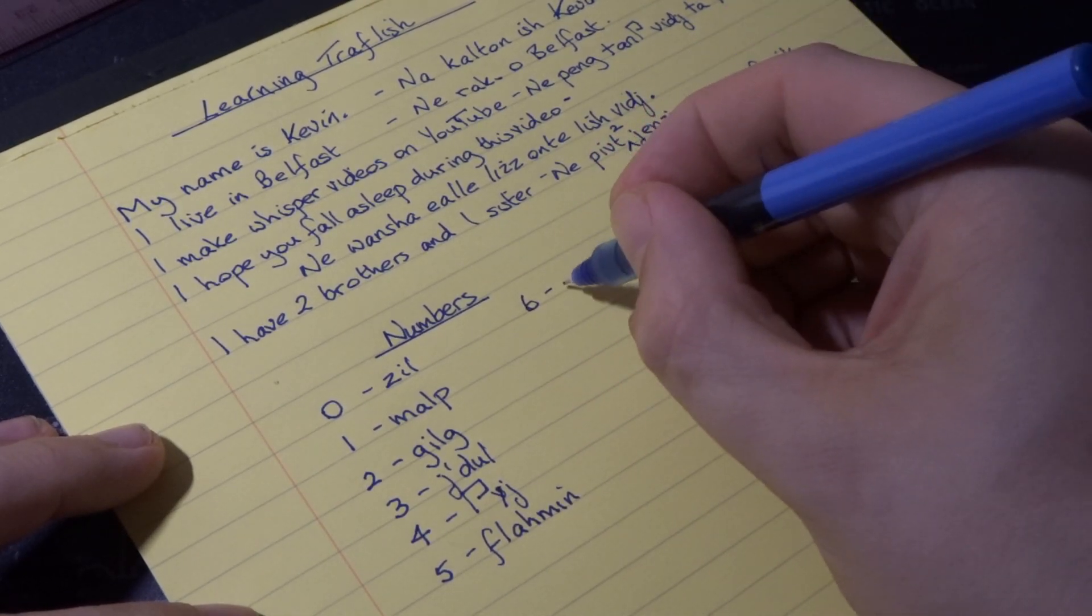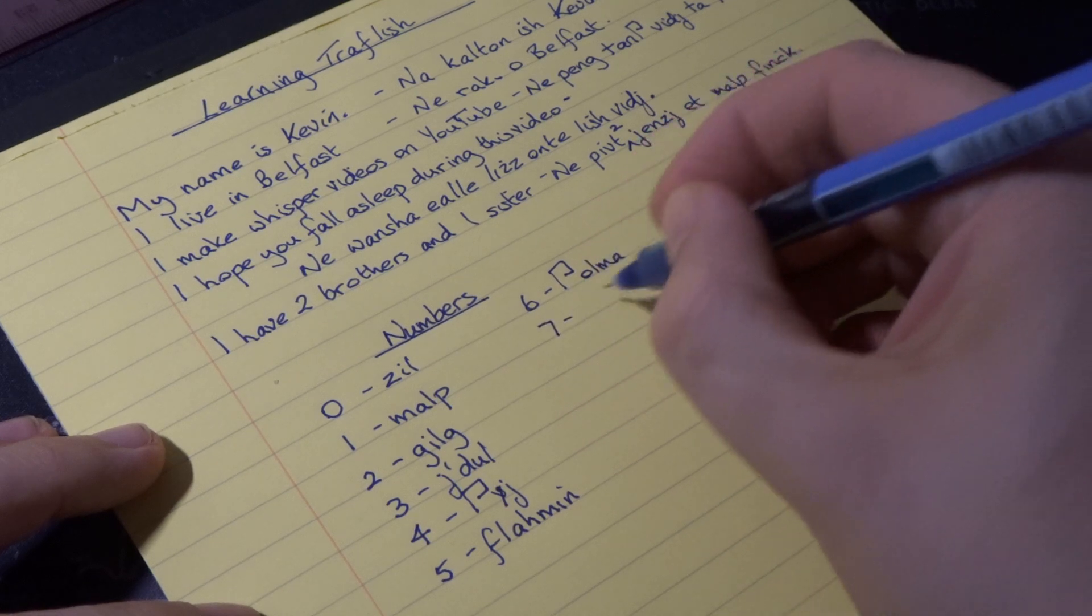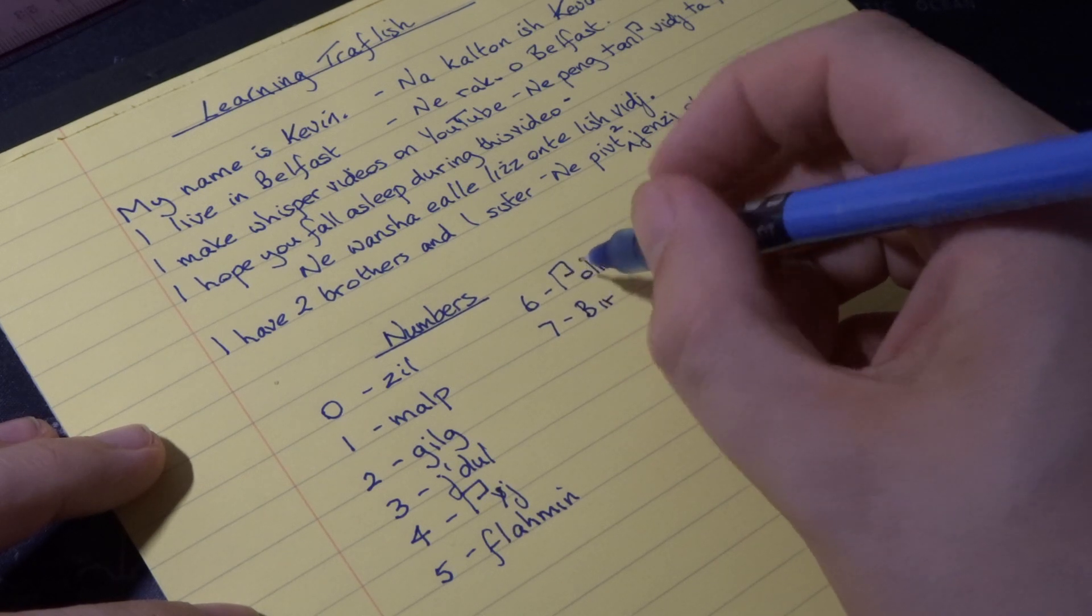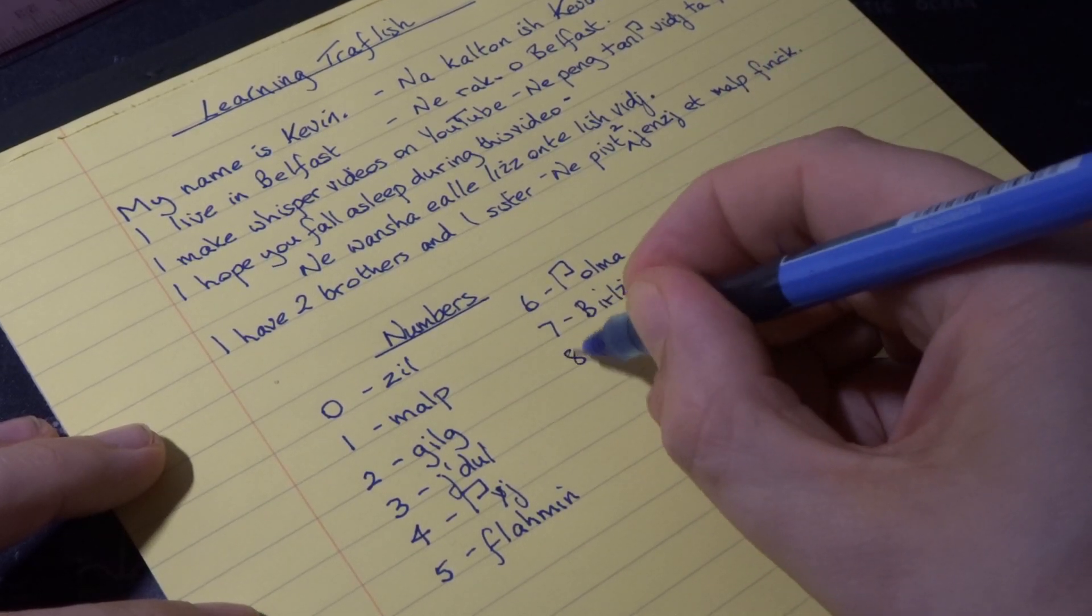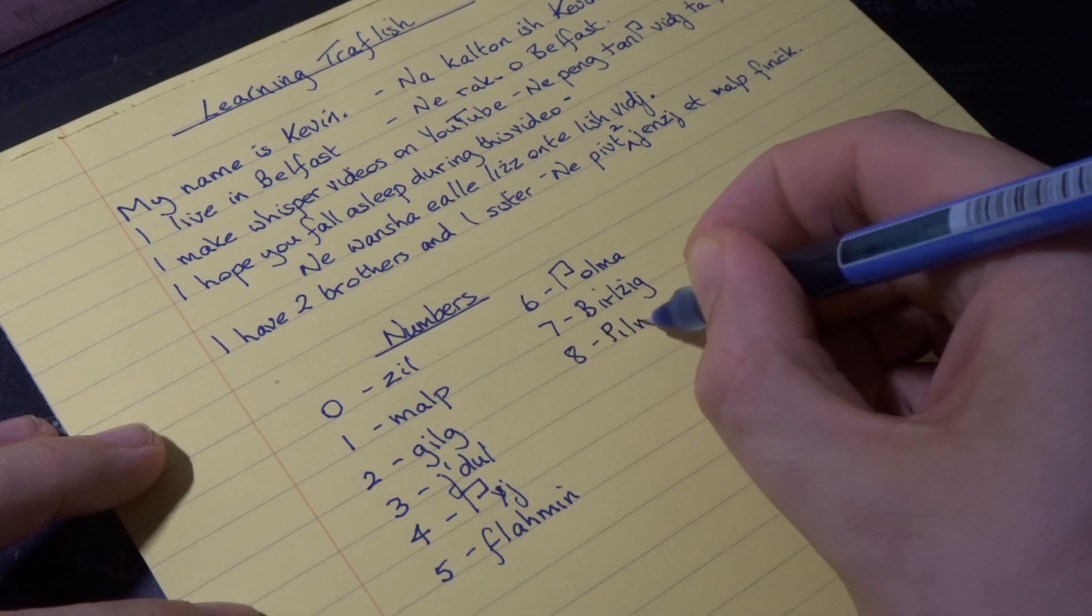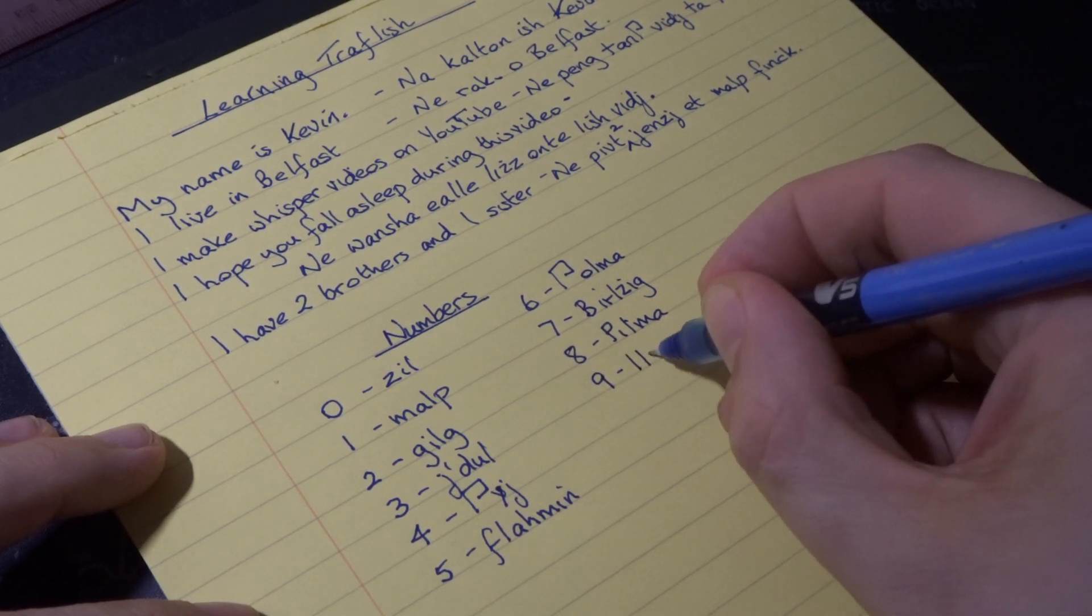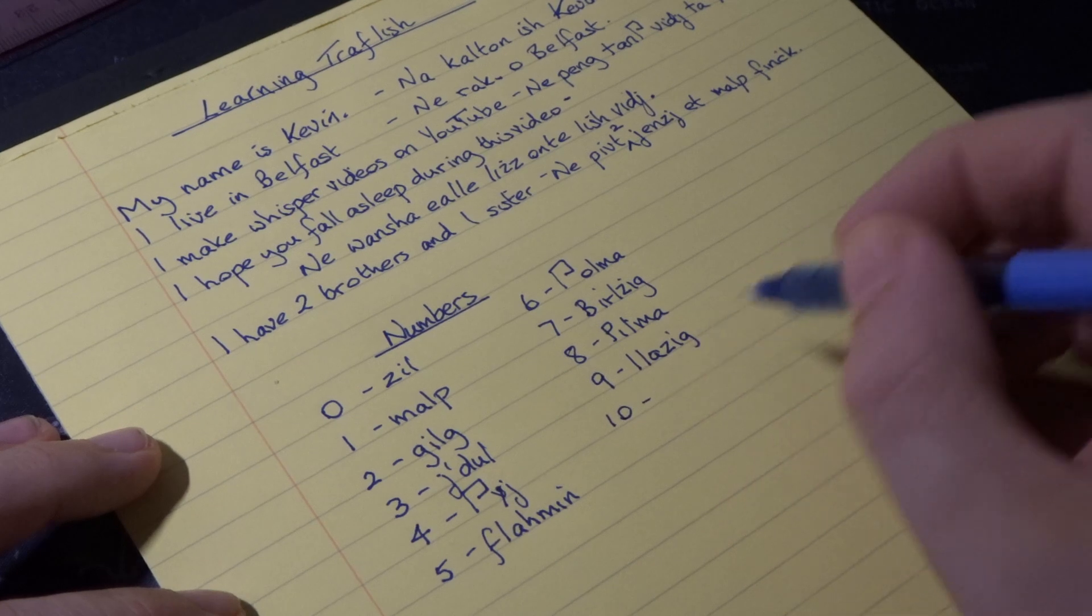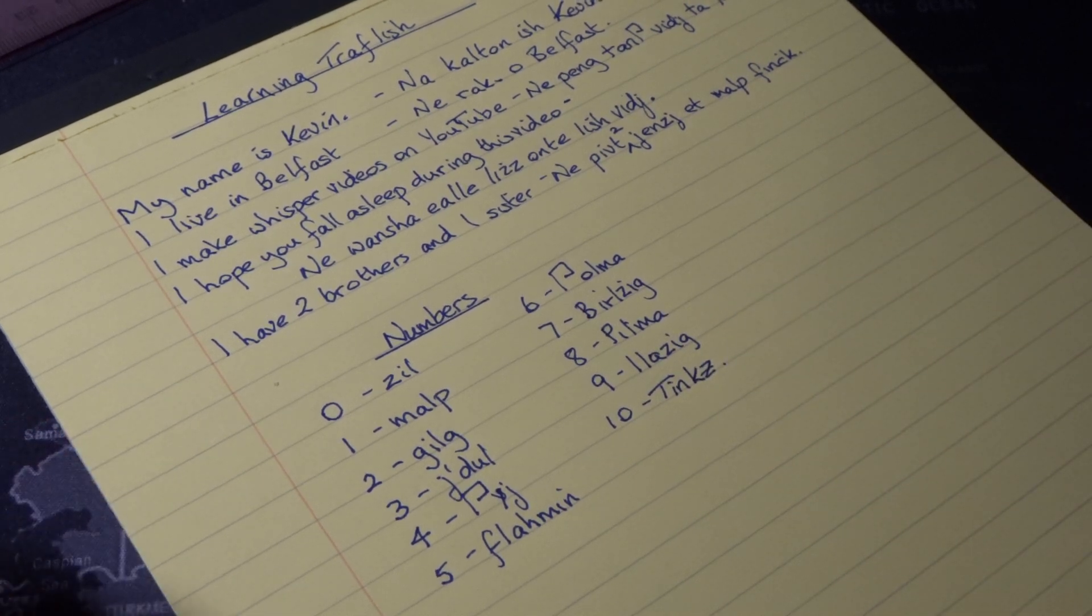Six is thulma. Seven, berlsig. Don't know why I started using a capital letter. Eight. Do you know what it is? Ten, palma, of course. And nine is ilesig. And ten is tinksa.